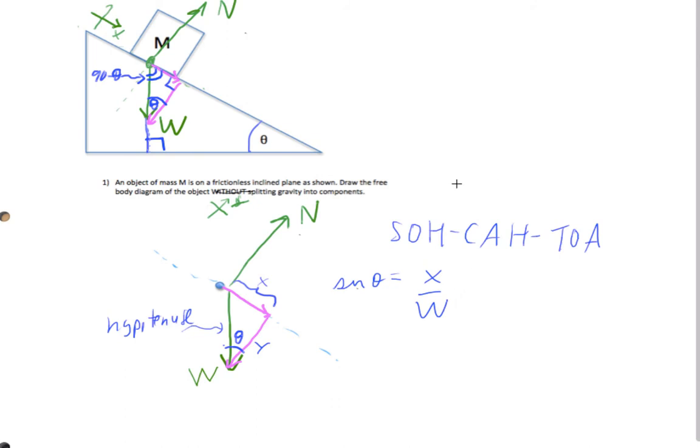So we have the sine of theta is x over w. Now I know what you're thinking about x's and y's and sines. Don't look at that. Actually look at this triangle right here. This is that leg. That's the opposite leg. That's the hypotenuse.